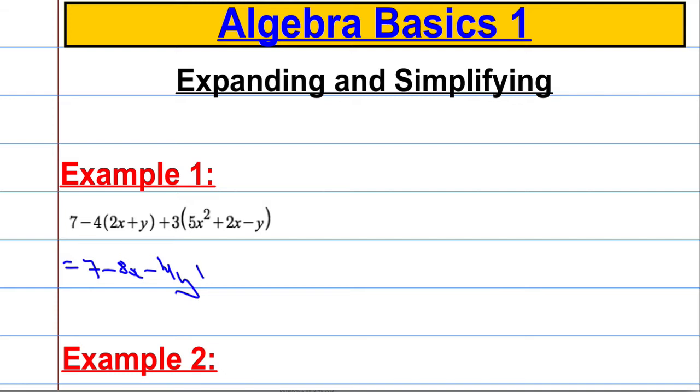Now we're going to expand this one in. 3 times 5x squared gives us 15x squared, and then 3 times 2x gives me 6x, and then 3 times minus y is minus 3y. That's the expanding done.